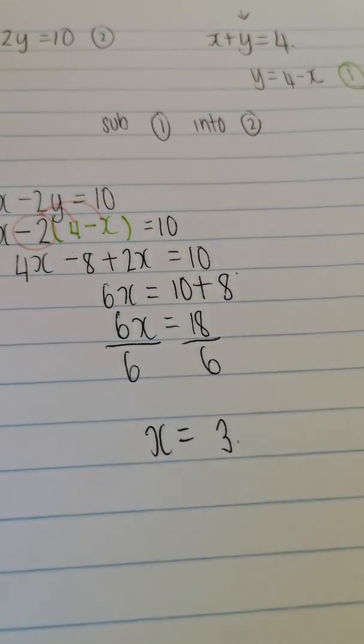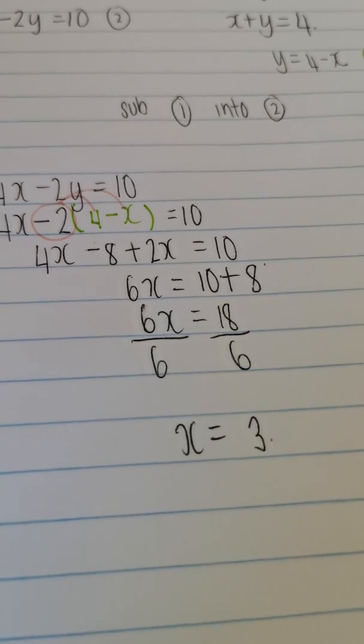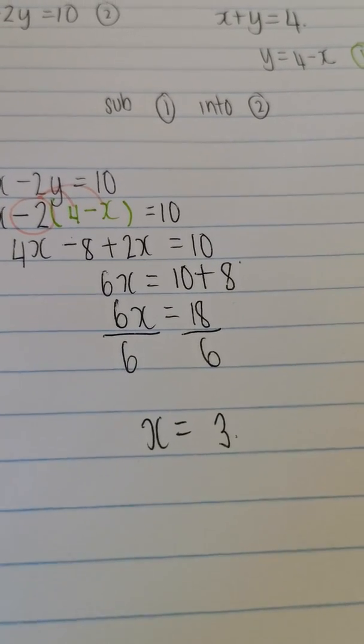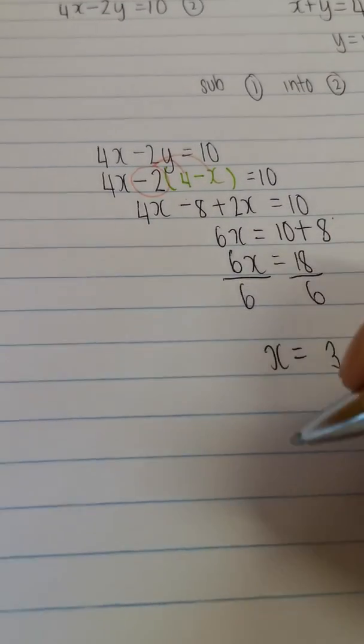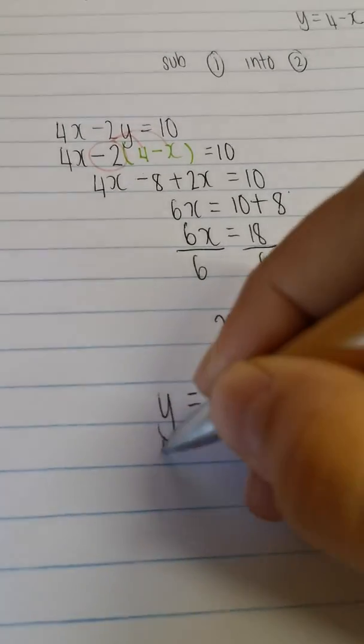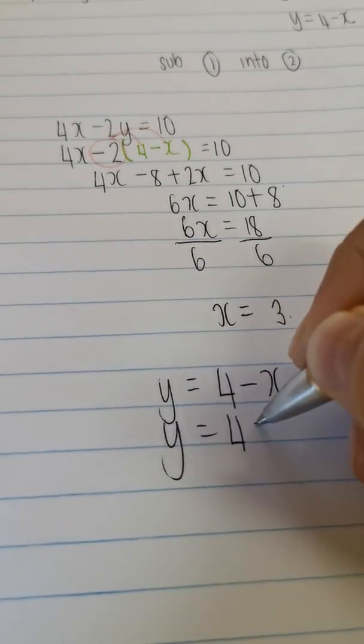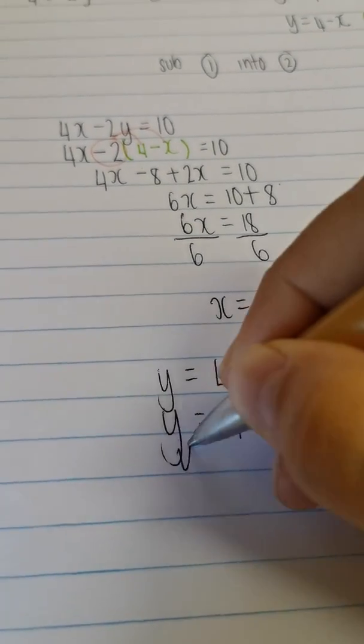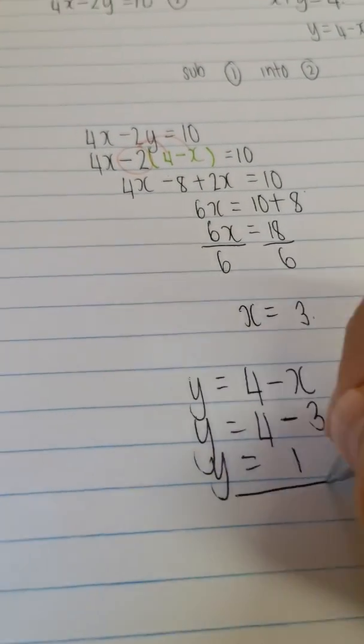But I'm not yet done because remember I needed to solve simultaneously. And it was for two unknown variables. Which means that I need to put the answer for y. y is equal to 4 minus x. y is equal to 4 minus 3. y is equal to 1.